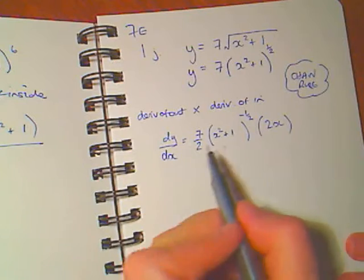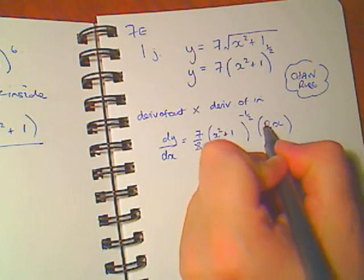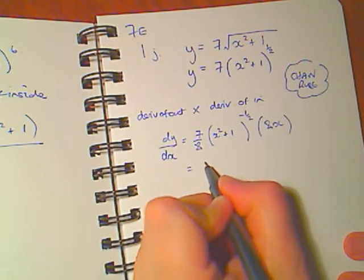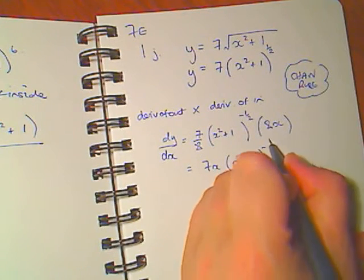I'll need to work out what I can here first so I can see that 2x times the half out the front here will cancel out that 2. So if I rewrite this I get 7x times x squared plus 1 to the minus a half.